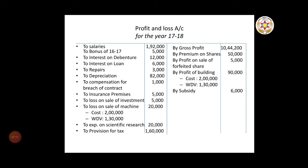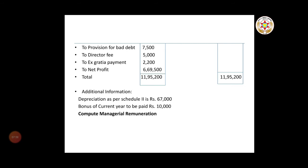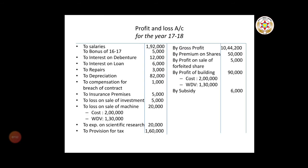The machine's original cost is 2 lakh and its written down value (WDV) is 1 lakh 30,000. WDV means the original value of the machinery has been reduced due to depreciation and its current book value is 1 lakh 30,000. Further debit items: expenditure on scientific research, provision for tax, provision for bad debts 7,500, director fees 5,000, ex-gratia payment 2,200, and net profit 6,69,500. Total is 11,95,200. On the credit side: gross profit 10,44,200; premium on shares 50,000; profit on sale of forfeited shares 5,000; profit on building 90,000 (cost 2 lakh, WDV 1 lakh 30,000); subsidy 6,000.